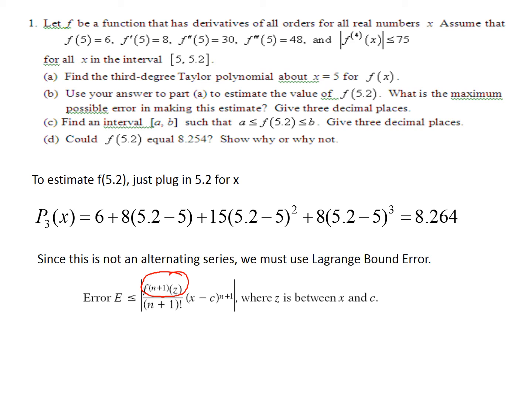Now what is this value? That becomes the problem. Well, I don't really need to know z. I just need to know what is the maximum the derivative can be, and I am given that information in the problem. I am told that the next derivative, the fourth derivative, its maximum is 75. So that is what I use in this problem.